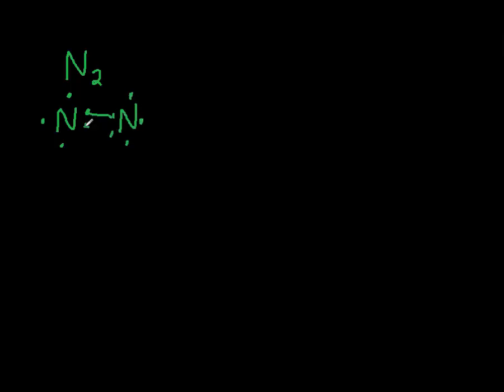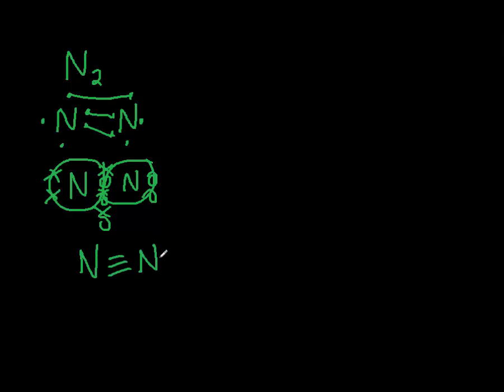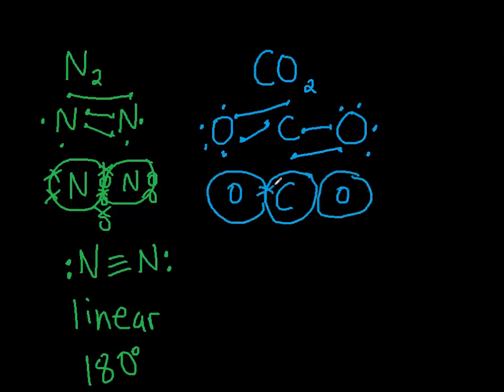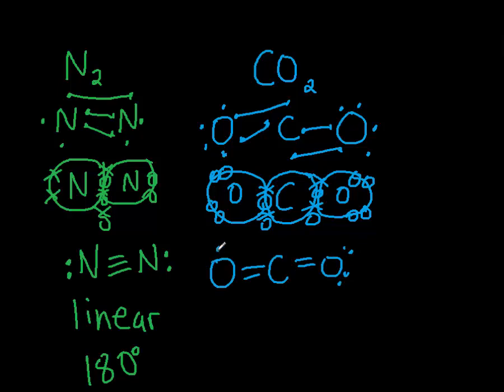Nitrogen, you can see here that I've had to draw in three lines before I managed to get eight around each one. So that gives us a triple bond and that becomes linear. Now the carbon dioxide here, you can see that there's a double bond on each of those. And so when I line those up, I also get a linear compound which is 180.